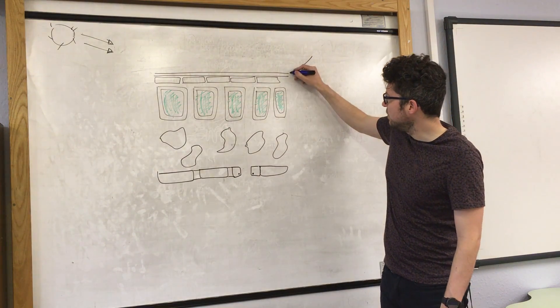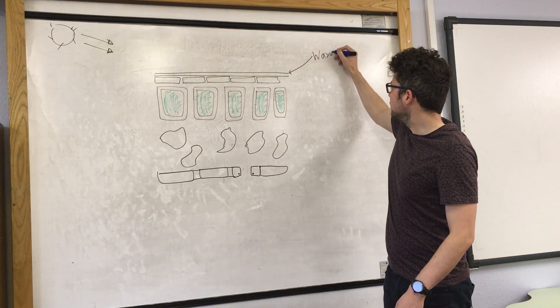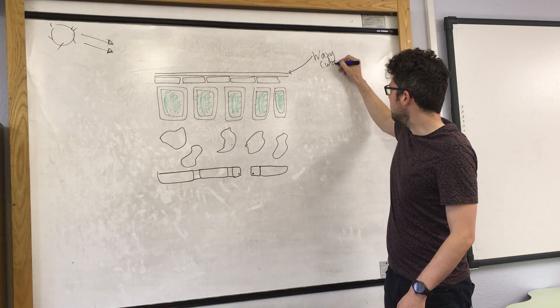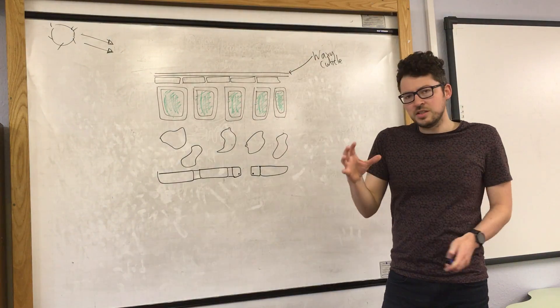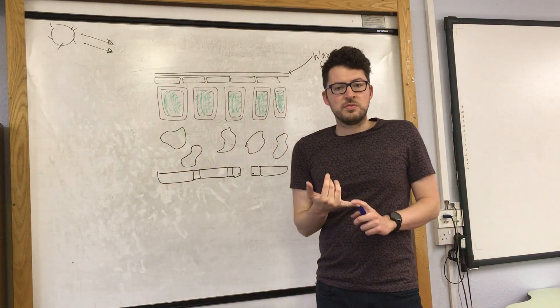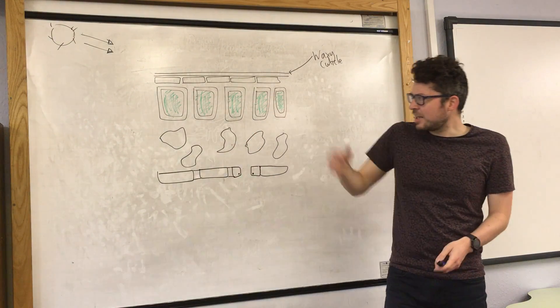The top layer has a waxy cuticle, and that covers the very top surface of the leaf. That's important because it is waterproof and prevents the plant leaf from becoming waterlogged.